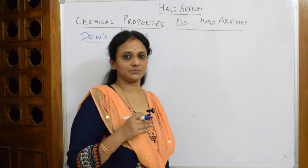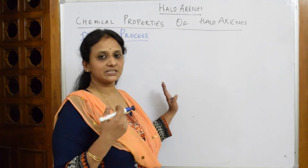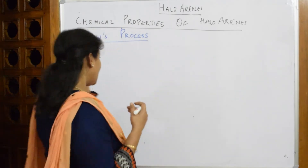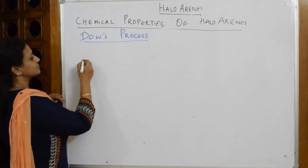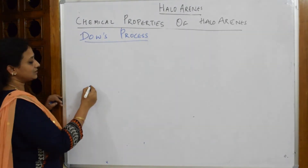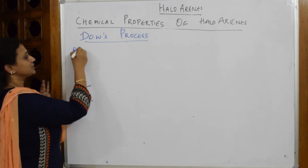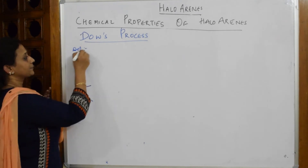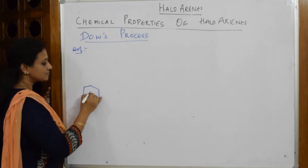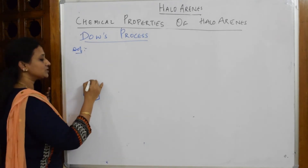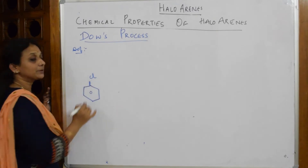Here also, I am going to use sodium hydroxide. That is the reason I have listed it under this. Now, in the Dow process, I will write the reaction here and the definition here. In this reaction, in the Dow process, first I am going to pick up chlorobenzene.